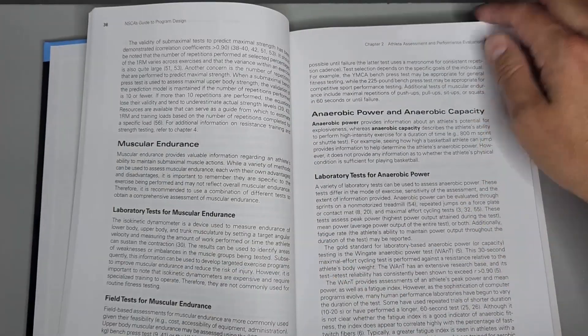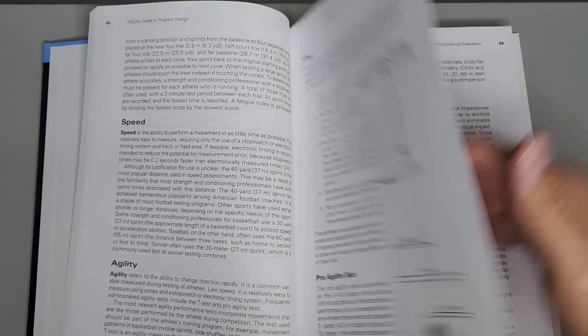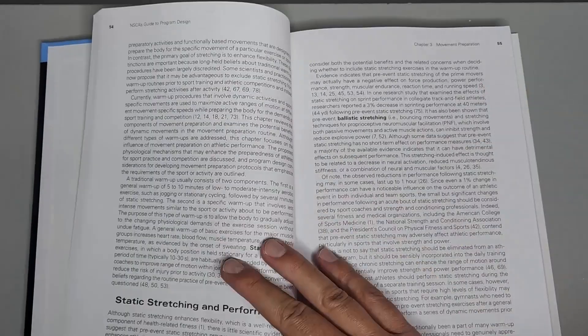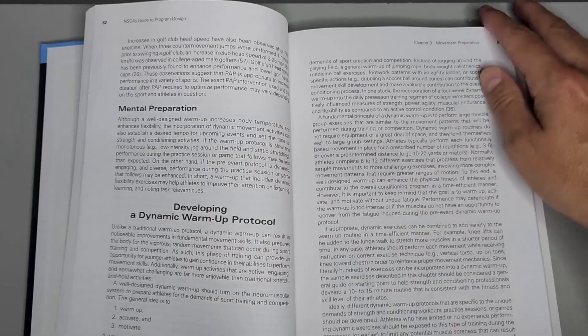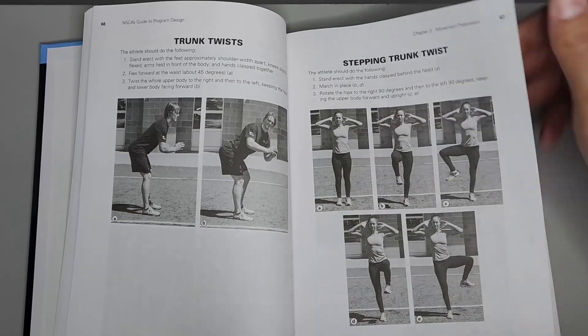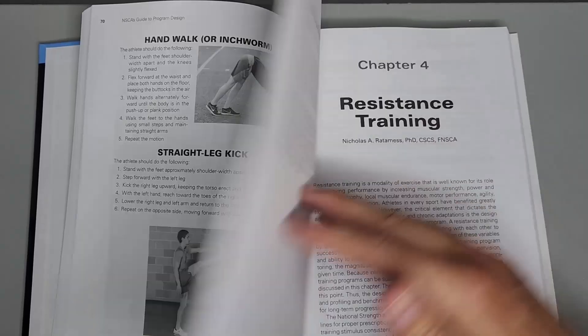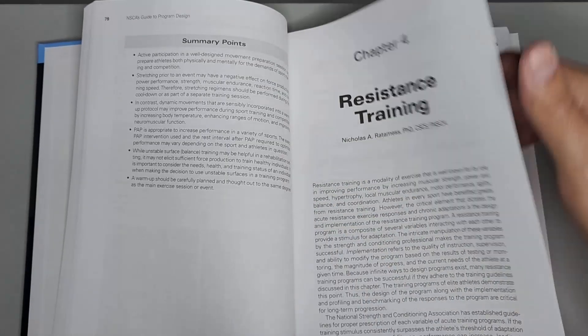NSCA's Guide to Program Design presents an evidence-based framework for athlete assessment strategies and training principles. This authoritative text moves beyond the simple template presentation of program design to help readers understand the reasons and procedures for sequencing training in a safe, sports-specific manner.